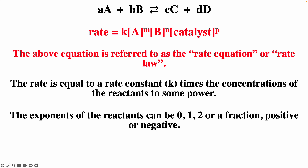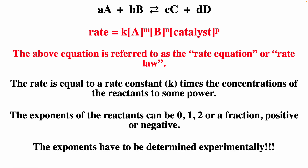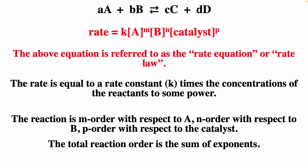The exponents — those powers — can be 0, 1, 2, can be a fraction, can be positive, or can be negative. That's why I say typically the higher the concentration the faster the reaction, because it's not always true. If you have a negative exponent, then the higher the concentration, the slower the reaction. Exponents have to be determined experimentally. The reaction is M order with respect to A and N order with respect to B.